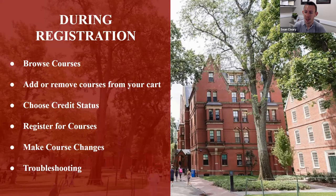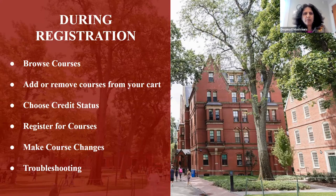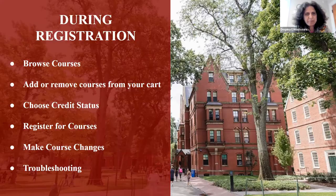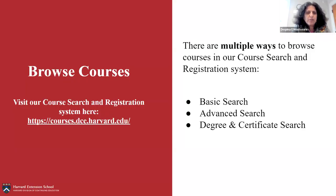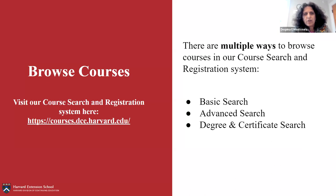Now I'll pass things over to Despina to cover everything during and after registration. We'll be talking about browsing courses, adding or removing courses from your cart, choosing a credit status, registering for courses, making course changes, and troubleshooting. One of the first recommendations is to familiarize yourself with the course search and registration system at courses.dce.harvard.edu. There are multiple ways to browse courses: a basic search, an advanced search, or a search specific to the degree and certificate you're pursuing.